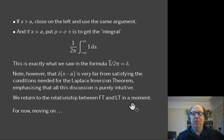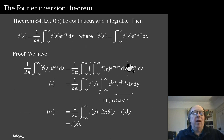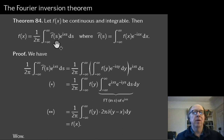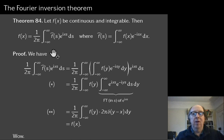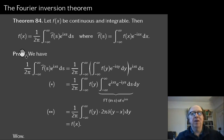Moving on to state the famous Fourier inversion theorem. Theorem 84: if f is continuous and integrable, then f can be recovered from its Fourier transform. The Fourier transform is f̂(s) = ∫ f(x) e^{−isx} dx. The inversion formula is f(x) = (1/2π) ∫ f̂(s) e^{+ixs} ds. Note the sign difference: the transform uses −isx and the inversion uses +ixs, with a factor of 1/2π. Some authors put √(2π) on both sides for symmetry.